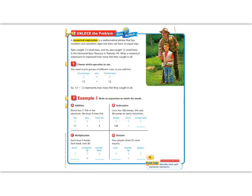Great job so far, fifth graders. Let's continue by reading our Unlock the Problem. A numerical expression is a mathematical phrase that has numbers and operation signs, but does not have an equal sign. Tyler caught 15 small bass and his dad caught 12 small bass at the Memorial Bass Tourney in Titidoo, Pennsylvania. Write a numerical expression to represent how many fish they caught in all. So our question actually says write a numerical expression. It doesn't say solve. But we do know that we need to say how many fish they caught in all. And I see the number that Tyler caught 15 and Dad caught 12. And the words in all tell me that I should add.